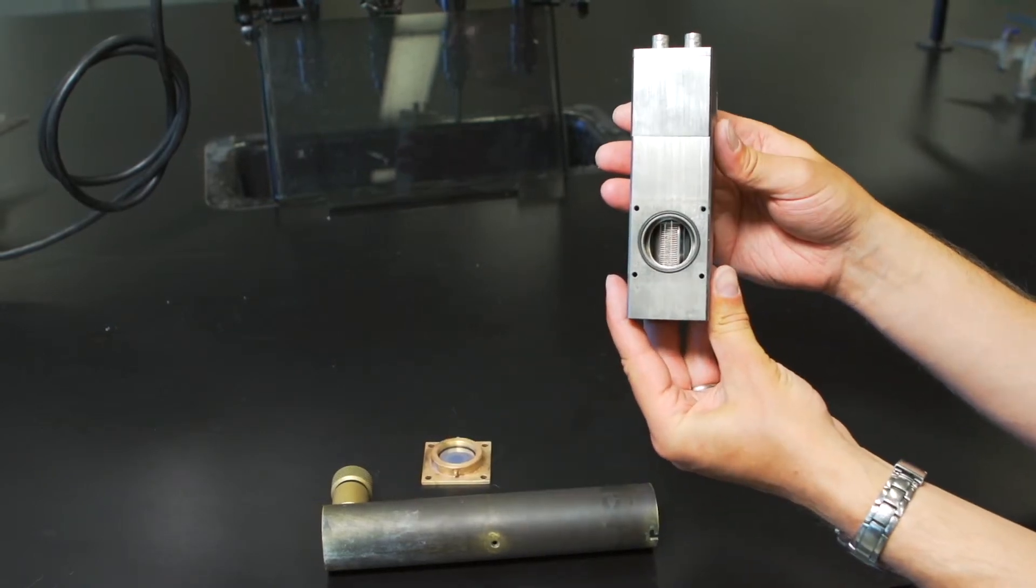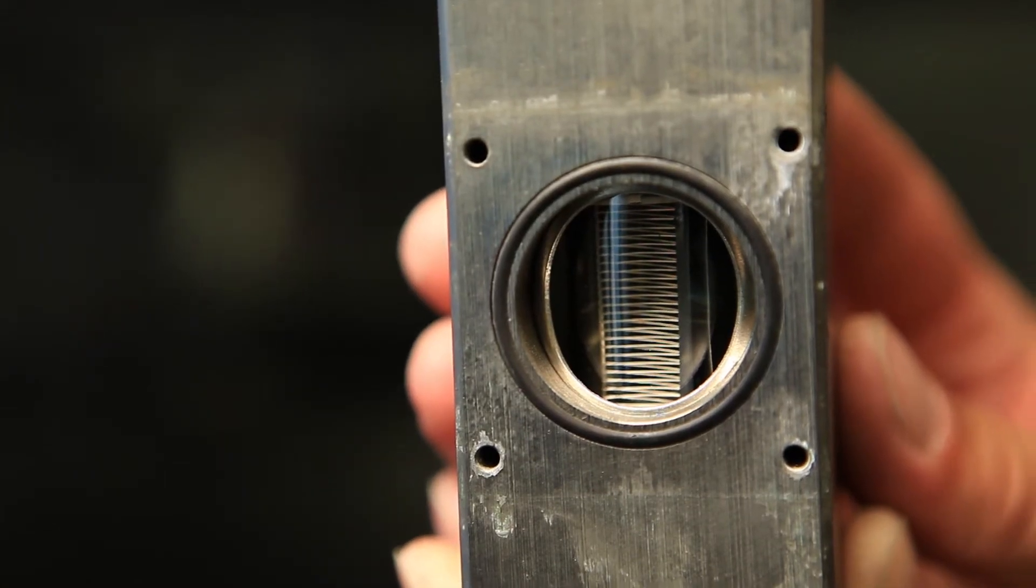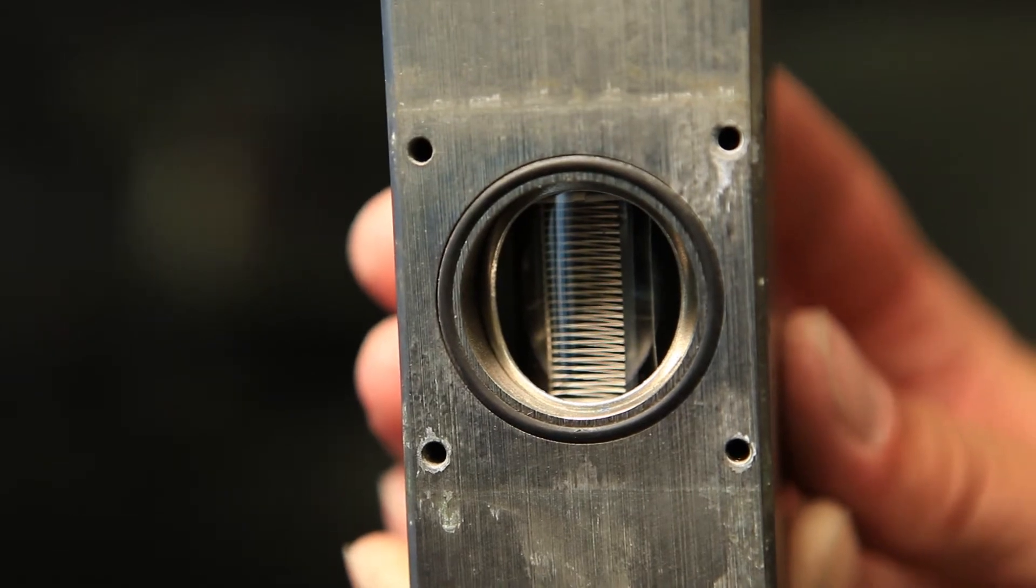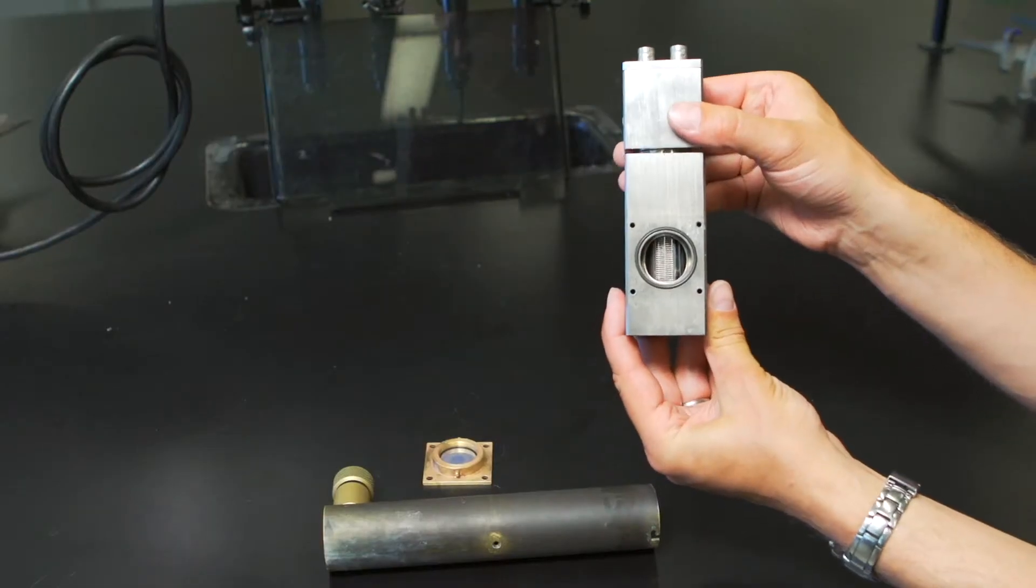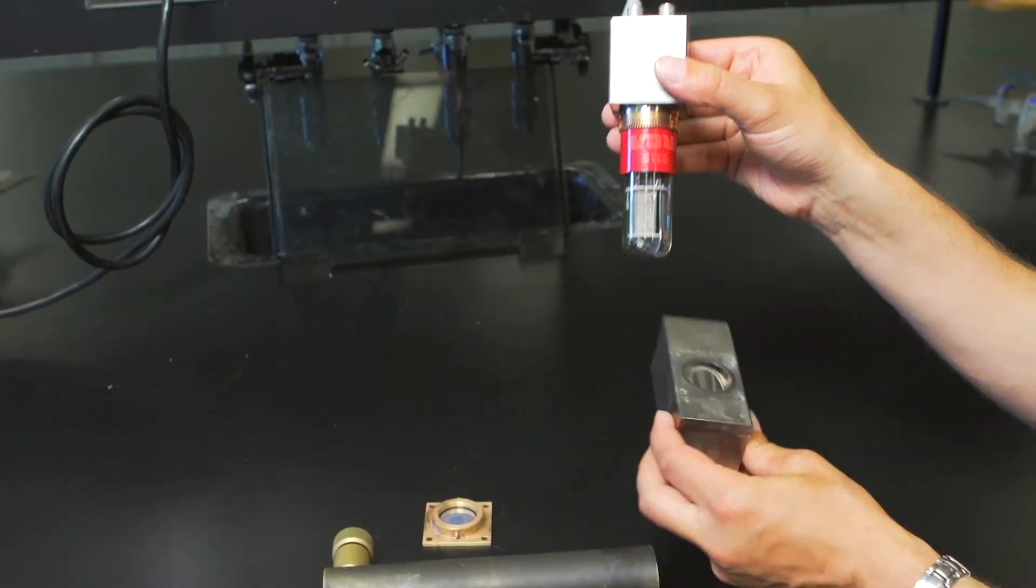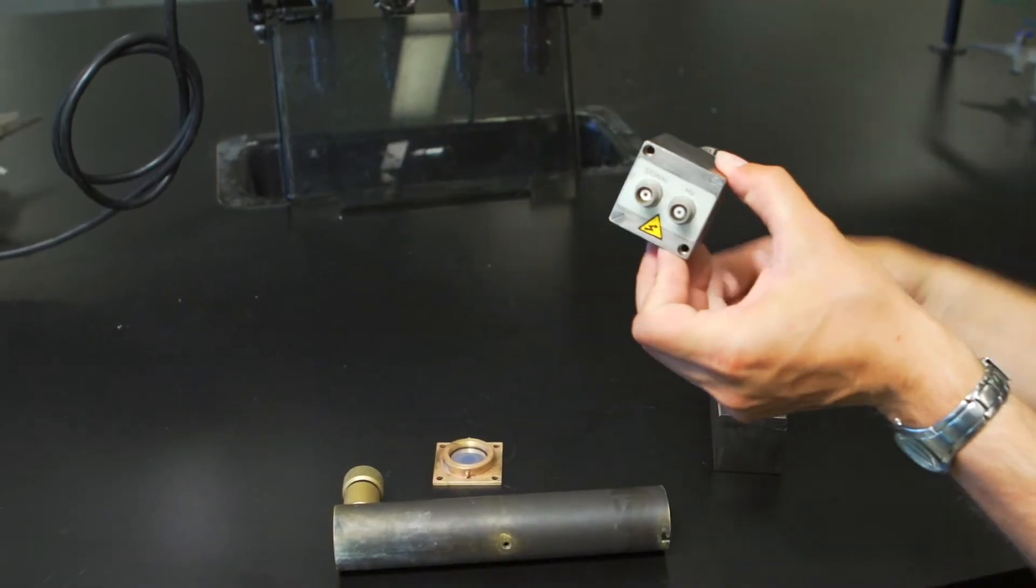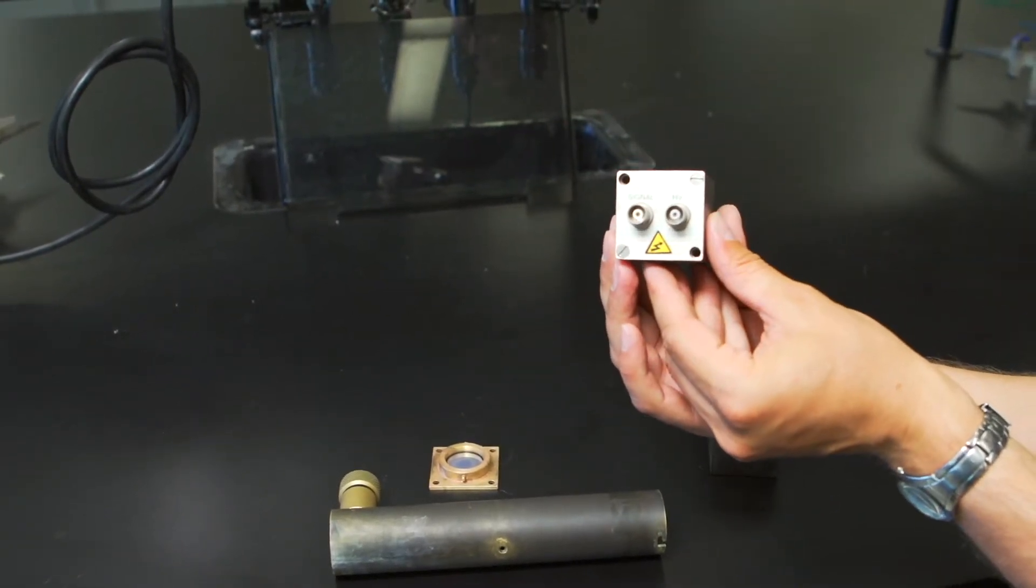The transmitted light is detected by the photomultiplier tube, or PMT, that is directly behind the optical filter. The PMT has two connections. One of them supplies high voltage to the PMT, while the other takes the signal from the PMT to the computer.